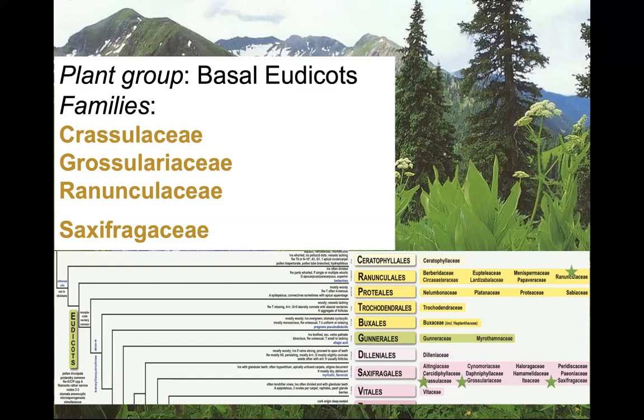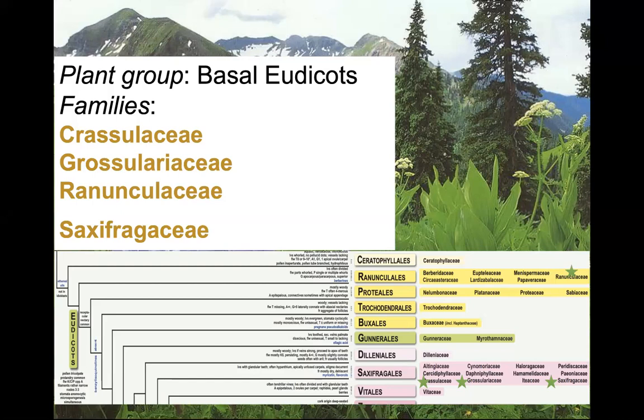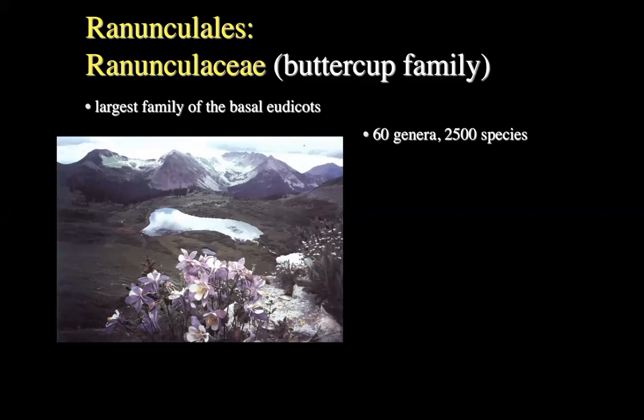In particular, we're focusing on four families: the Crassulaceae, the Grossulariaceae, the Ranunculaceae, and the Saxifragaceae. We'll start within the order Ranunculales and focus on the Ranunculaceae, or the buttercup family — the largest family of the basal eudicot groups we're talking about today. There are over 2,500 species described in 60 genera. The family spans the globe, but by far the majority of species are in temperate latitudes and cold regions, including alpine areas in both the northern and southern hemispheres. You really don't see this in tropical rainforests or deserts — this is a lot of alpine spring wildflowers.